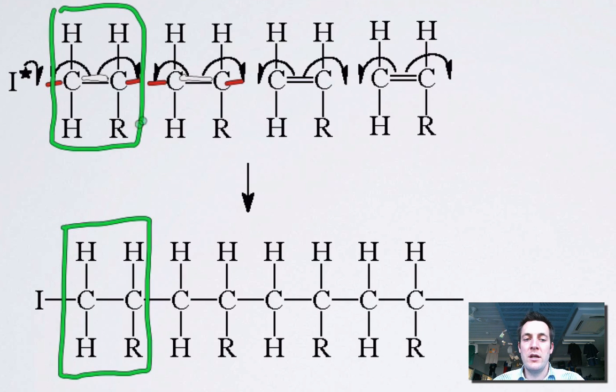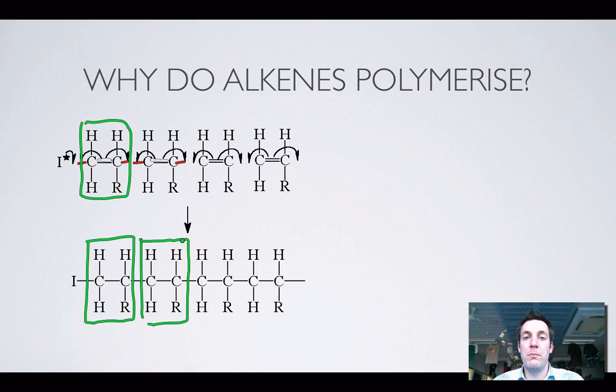So I've got this molecule here without its double bond now. There's another one. The double bonds have opened up and we've joined lots and lots of molecules together. So that's why alkenes will form polymers. It's because they're unsaturated and we can open their double bonds up and join lots of them together.